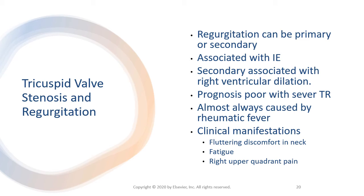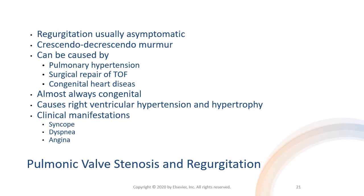Tricuspid stenosis is almost always caused by rheumatic fever. Signs and symptoms include fluttering discomfort in the neck, fatigue, and possible right upper quadrant pain. Pulmonary regurgitation is often asymptomatic; a crescendo-decrescendo murmur is present. Potential causes include pulmonary hypertension, surgical repair of tetralogy of Fallot, or congenital valve disease, and it can cause right ventricular dilation.